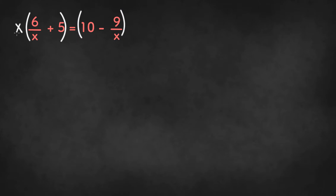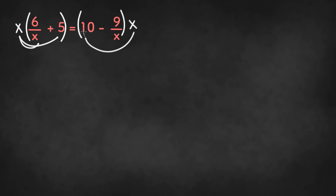When we multiply both sides of the equation by x, we need to distribute x to 6 over x and to the 5, and on the right side we have to distribute x to the 10 and to the 9 divided by x.